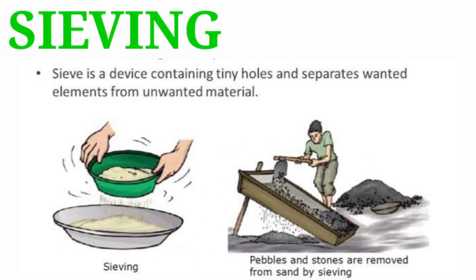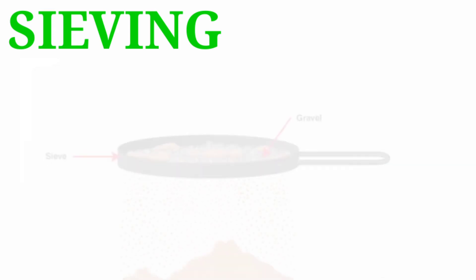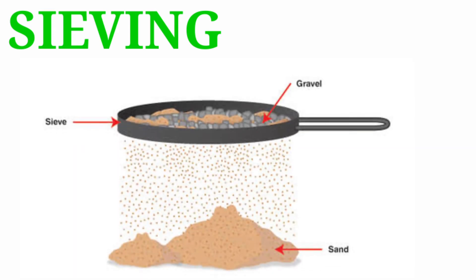Sieving is a method of separating particles of different sizes using a sieve. A sieve is like a net which has holes; the size of the holes is such that particles of only one component of the mixture are able to pass through. Sieving is also used at construction sites to remove pebbles from sand. The fine components pass through the sieve while the bigger components remain on it.